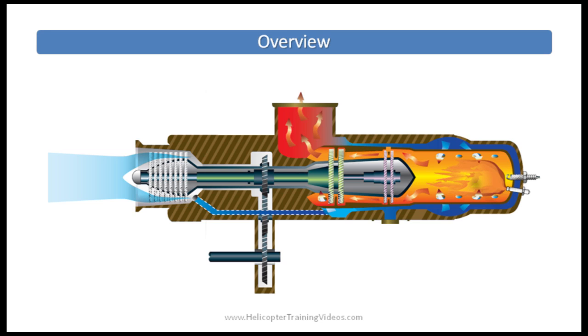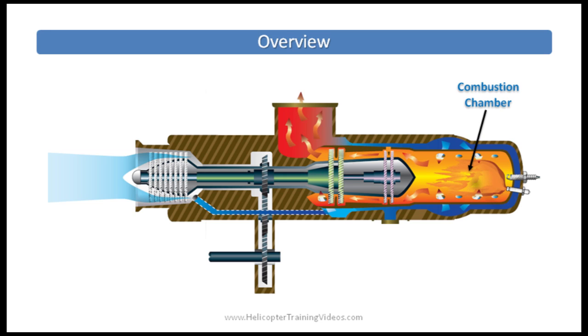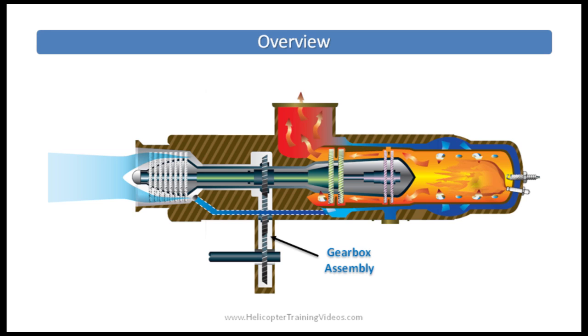There are four main sections to a turbine: a compressor section, a combustion chamber, a turbine section, and a gearbox assembly.